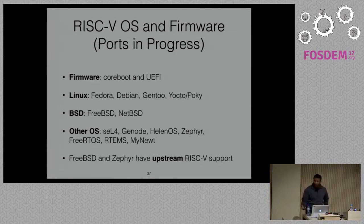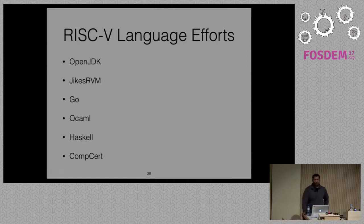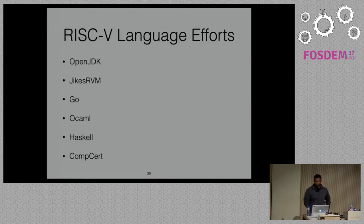There are a number of RISC-V language efforts in progress. For Java, there are people working on OpenJDK and JikesRVM. There's a Go port — some Google people gave a talk at the last RISC-V workshop and are making a lot of progress. There are people working on OCaml and Haskell support. CompCert, a formally verified tool chain, also has RISC-V support. People from Rust are interested in getting RISC-V — it hasn't started yet because they're waiting on the LLVM port, but once LLVM comes in we'll see a lot more language efforts.